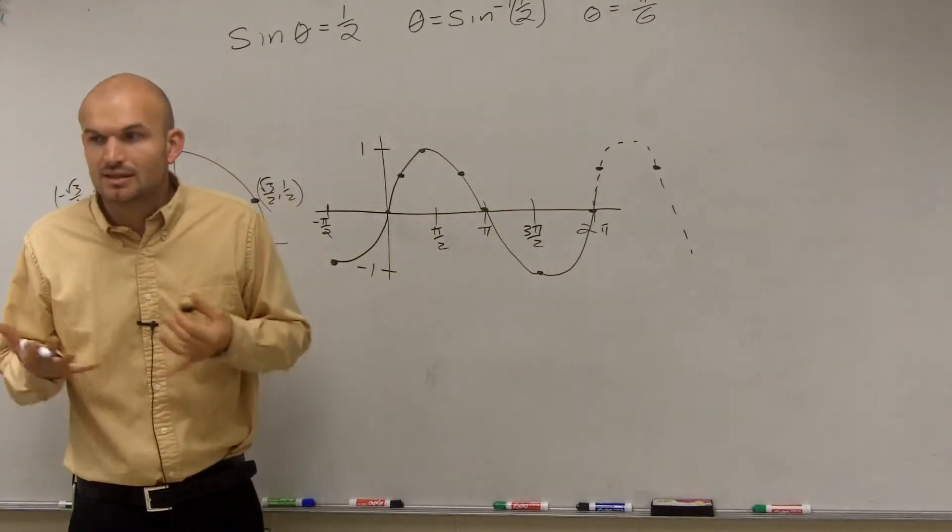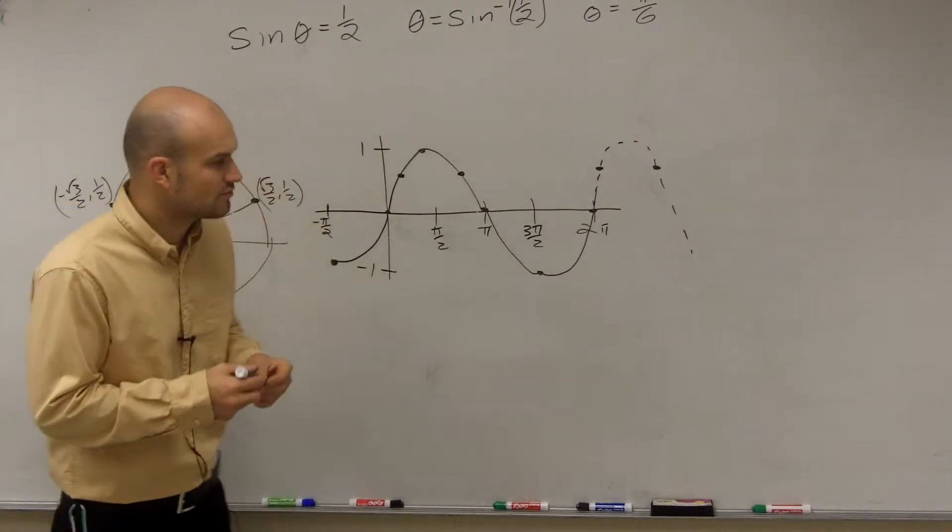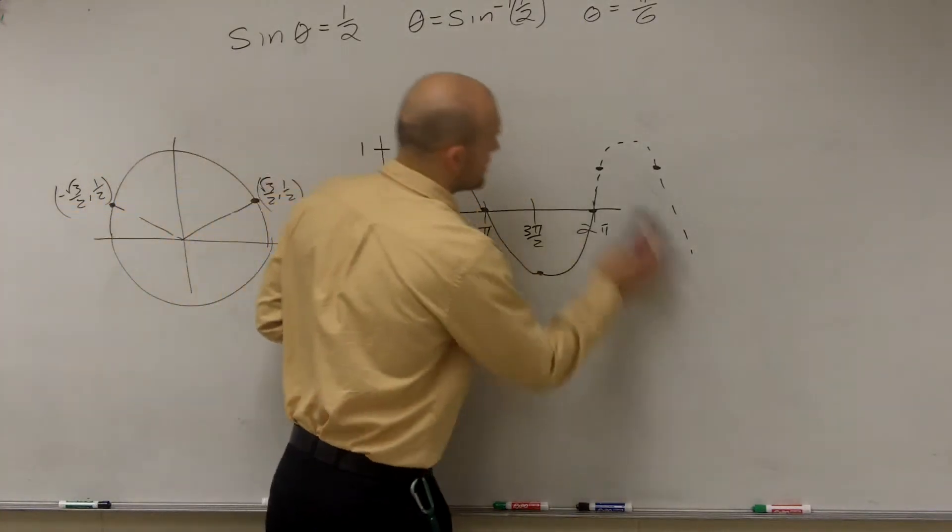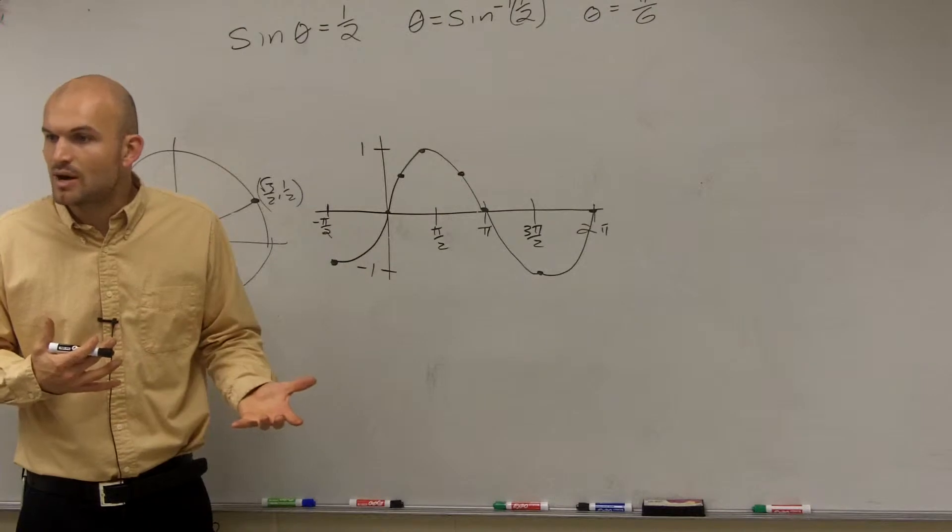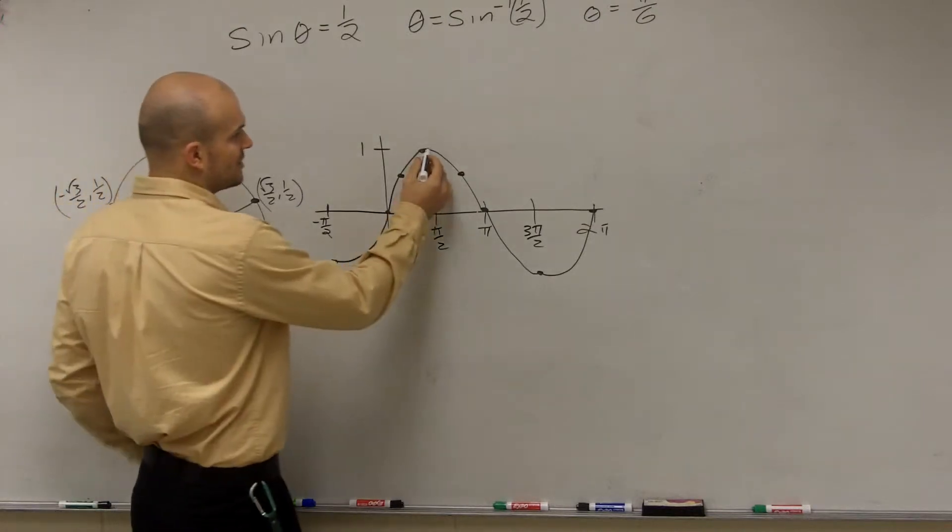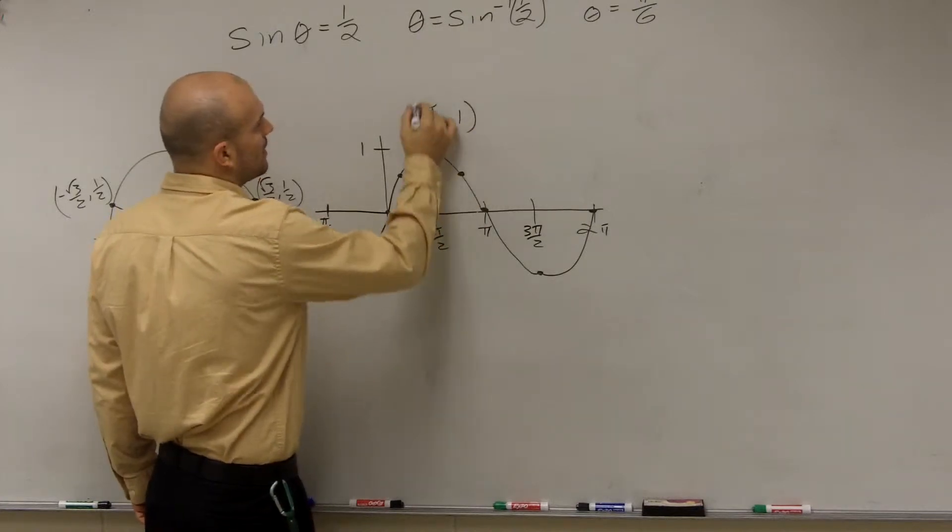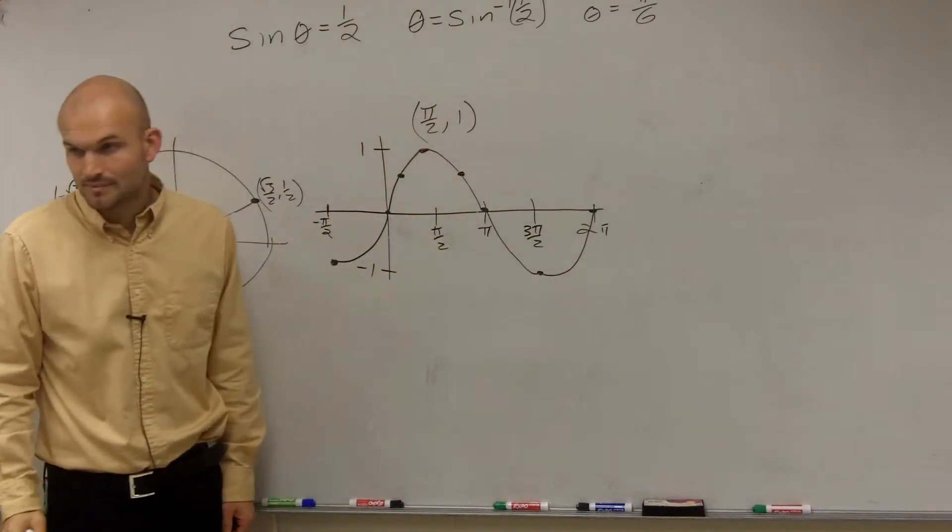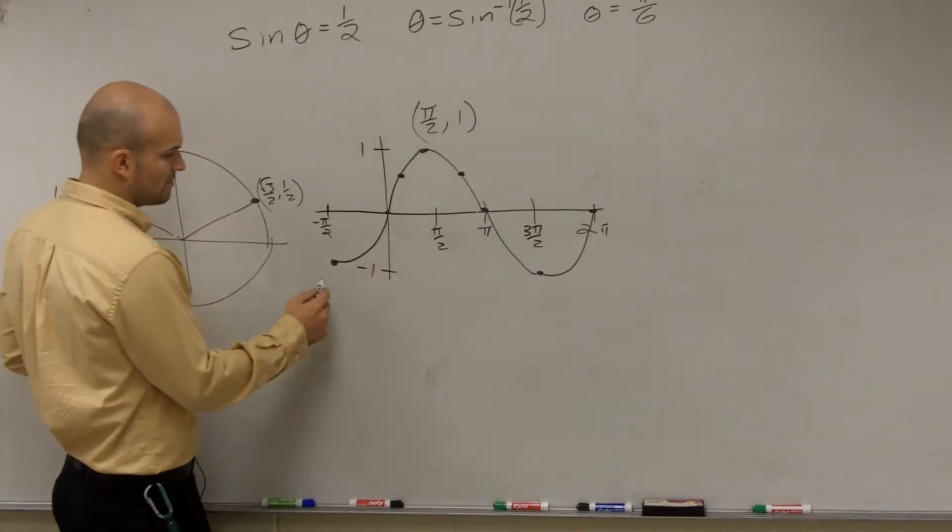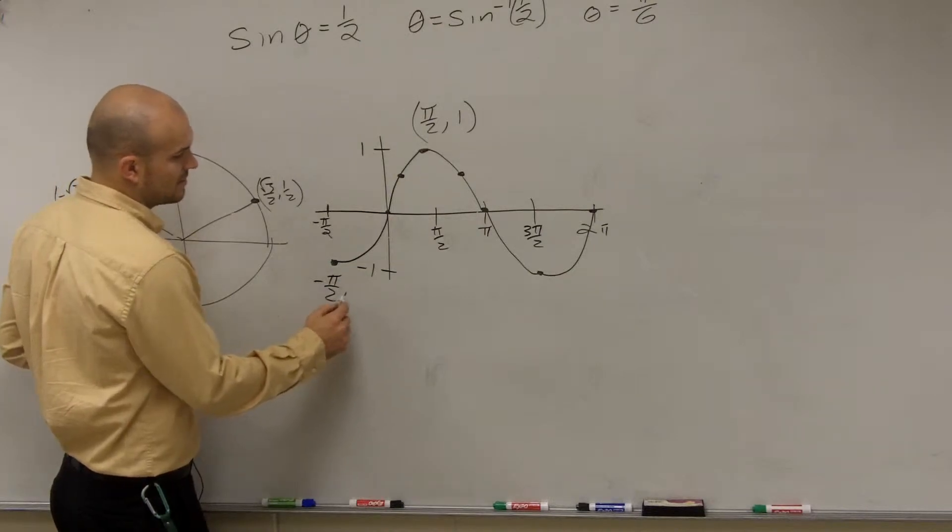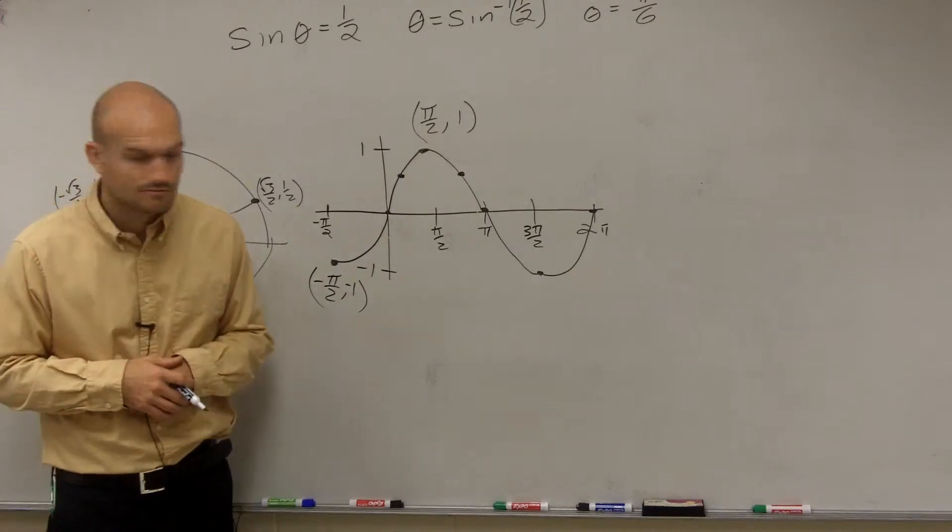When we want to find the inverse, let's graph the inverse to see how we can affect this. If I want to graph the inverse, remember I take an xy value and swap it with other xy values. This first point is π/2, 1 - that's my maximum point. Then -π/2, -1.